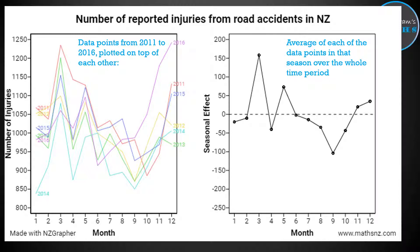On the right hand side, the graphing program takes the average of each of those data points within each month. So for January, it adds up all of the data points for those separate years and averages them, then plots them on the right hand side — the same for each of the months as it goes through. So you can see what's happening on average within each season. That seasonal effect tells us how much above or below the trend line it is on average. That dotted line in the middle is the long-term trend line, and each of those data points tells us how much above or below the long-term trend line we can expect to be.